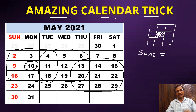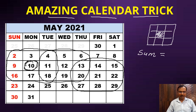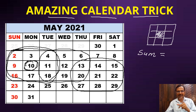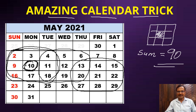He will select the block, add all the numbers, tell you only the middle number, and you will tell him the sum. Suppose he picks this block: 2, 3, 4, 9, 10, 11, 16, 17, 18. You don't know the nine numbers — you only know the middle number is 10. If he tells you the middle number is 10, you tell him that the sum of these nine numbers is 90.